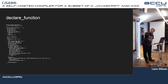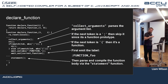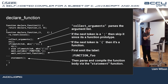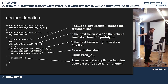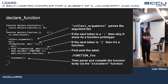Declare-function is a bit more complicated. The collect-arguments function parses the argument list. Once that's done, you check the next token: if it's a semicolon, you've got a function prototype and can skip it. If the next token is a curly brace, it's a function body and you start compiling the function. The first thing you do is emit ':function_name', so ':function foo', then carry on parsing and compiling the rest of the function with the statement function.